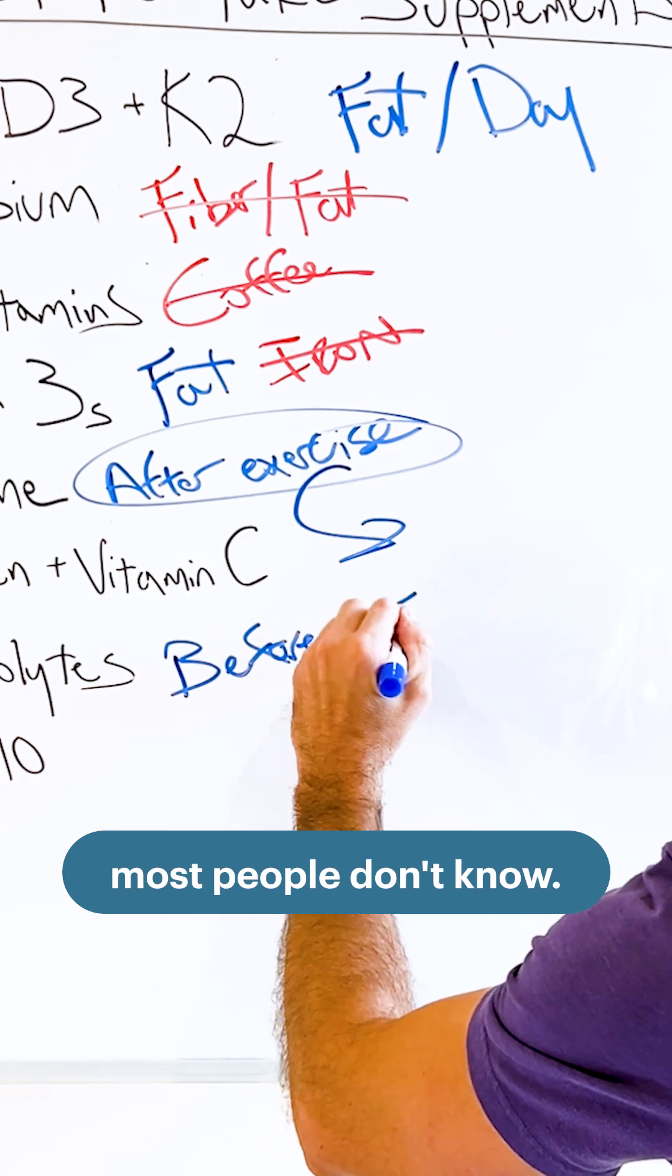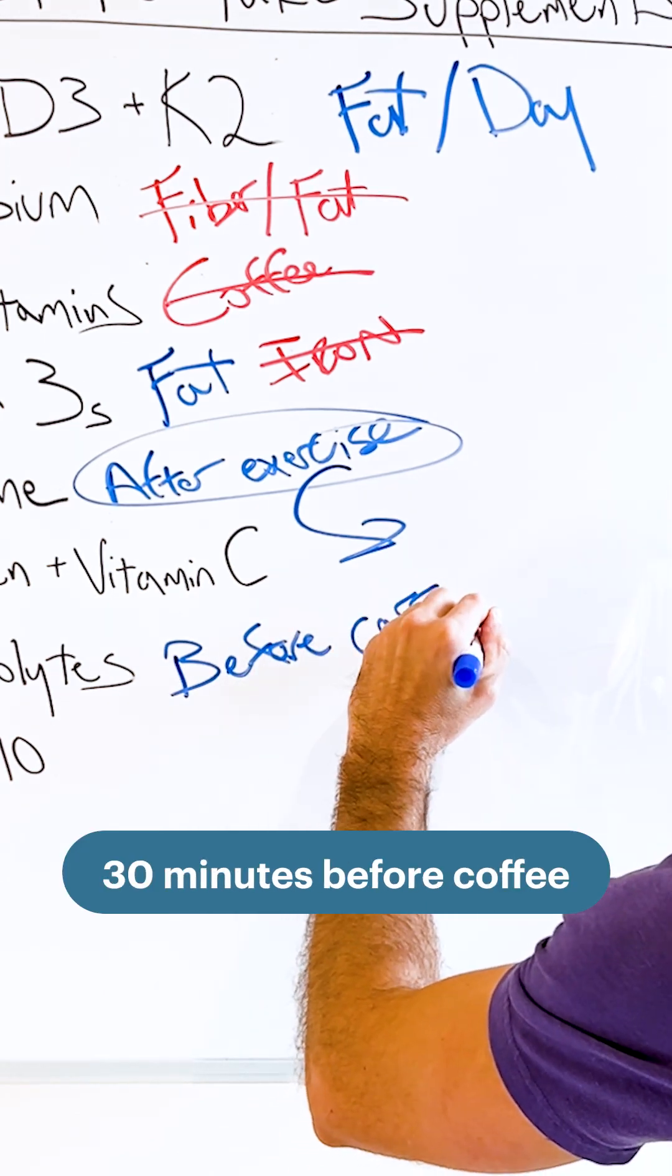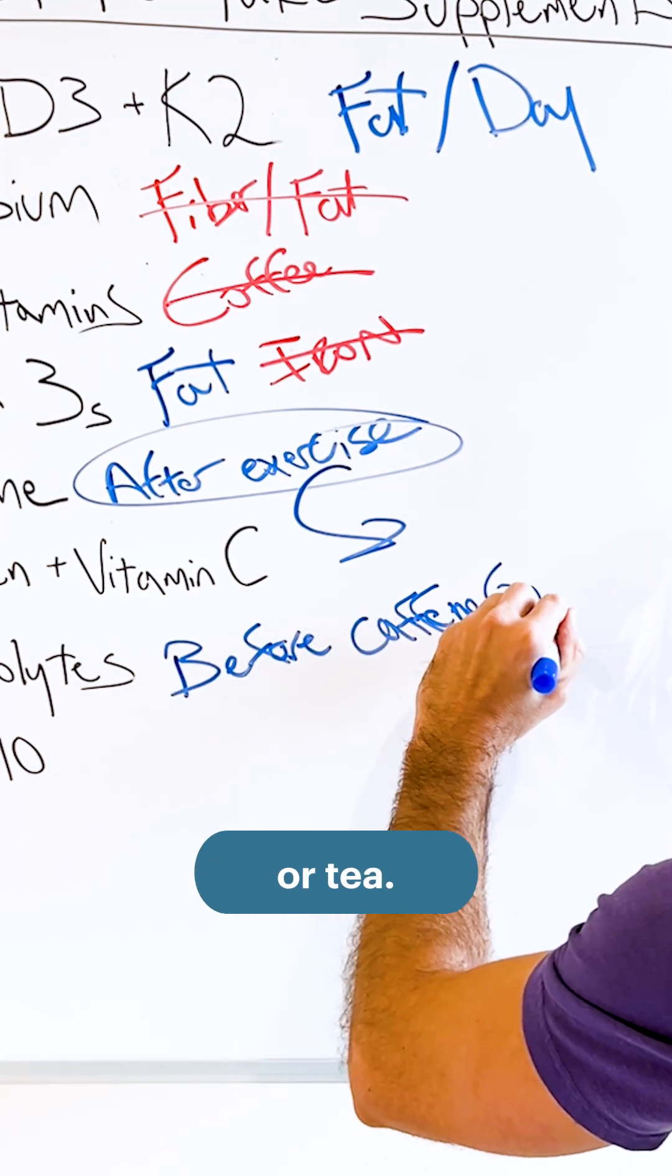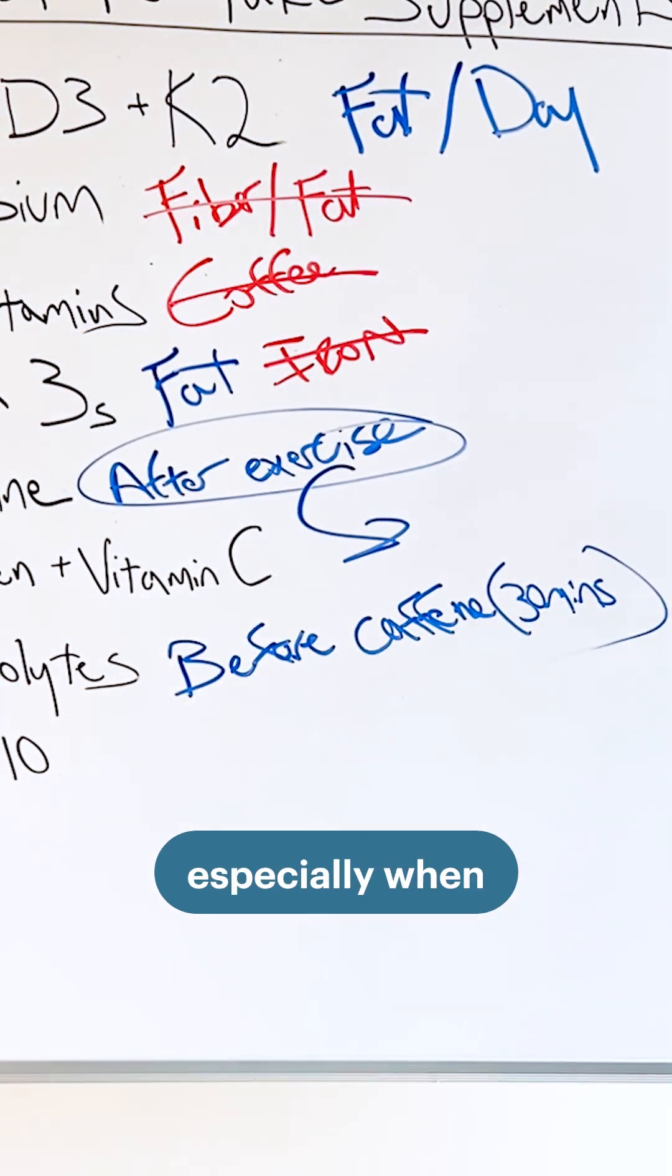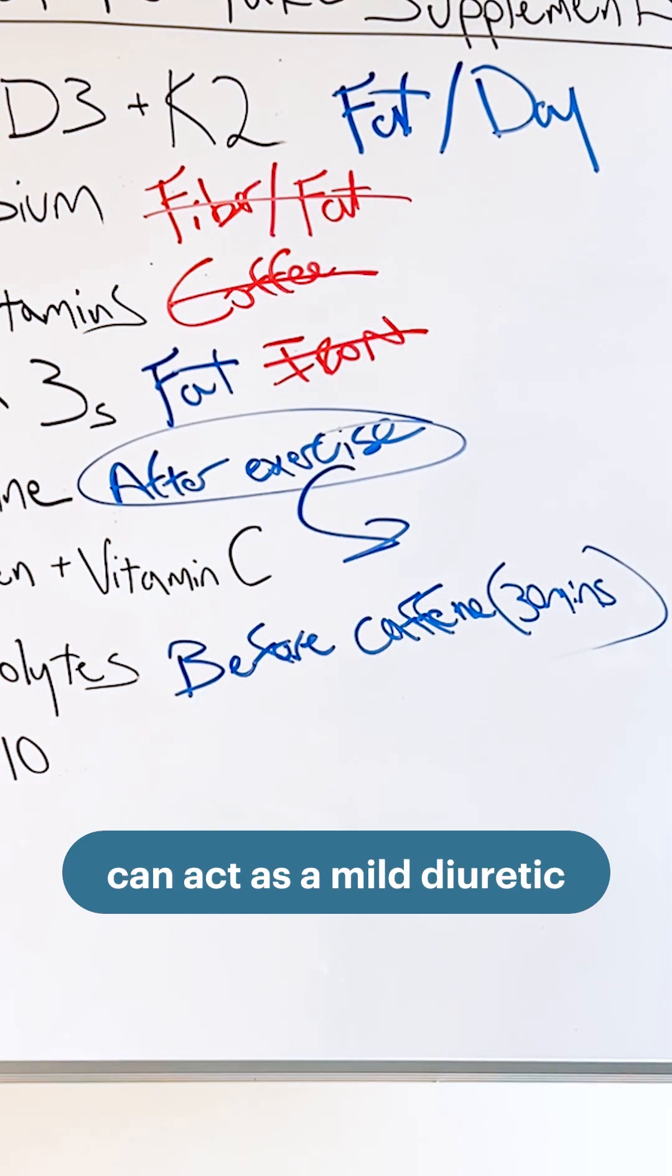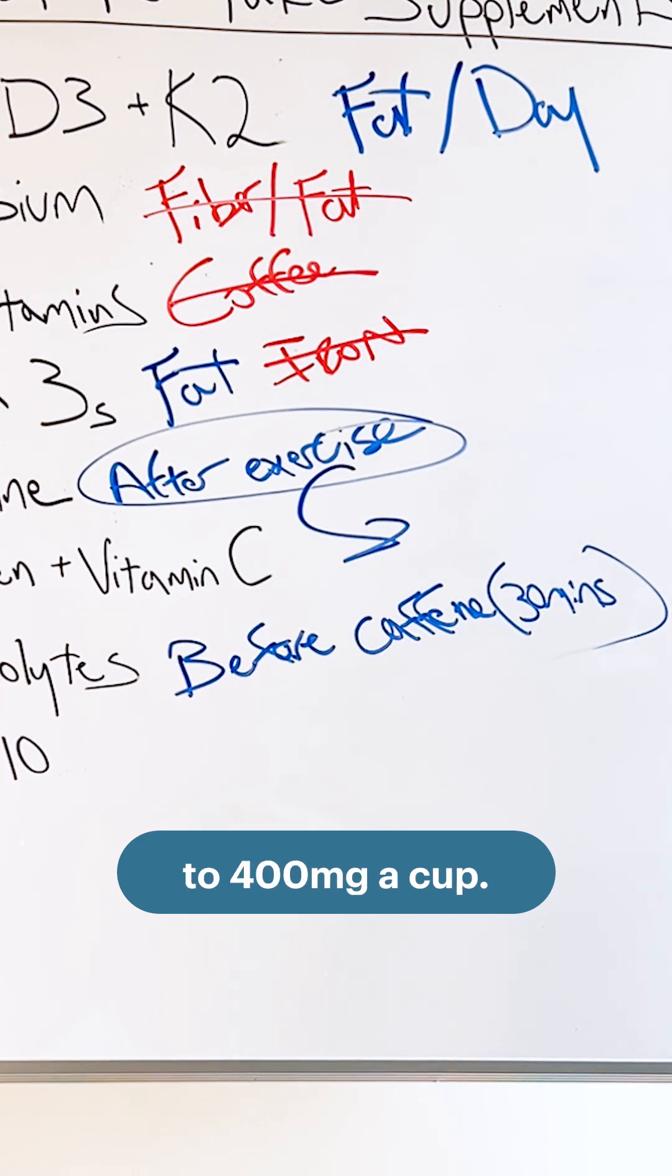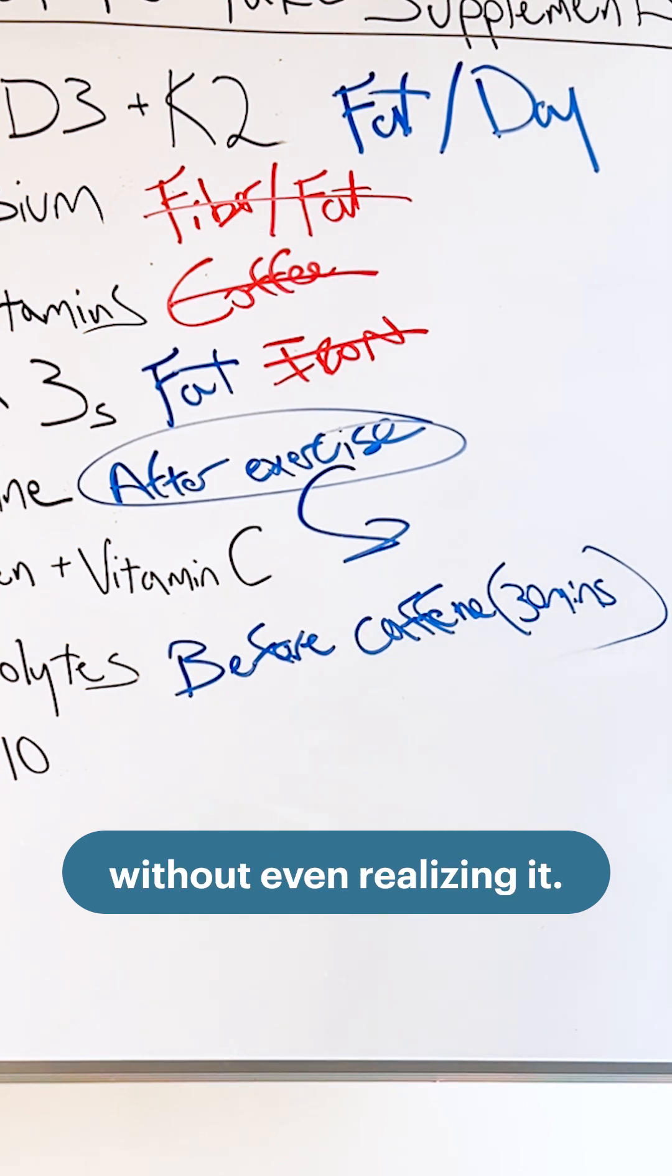Now here's a trick most people don't know. Take salt and electrolytes 30 minutes before coffee or tea, before caffeine. Caffeine, especially when we're not habituated, can act as a mild diuretic and increase sodium loss through urine, sometimes up to 400 milligrams a cup. Two cups, roughly 600 milligrams, and four cups we could lose over a thousand milligrams of sodium without even realizing it.